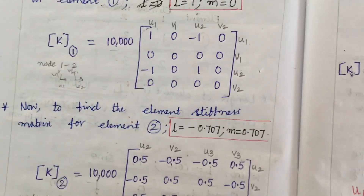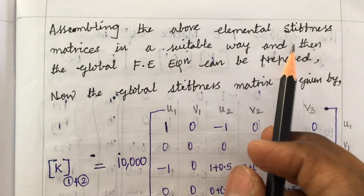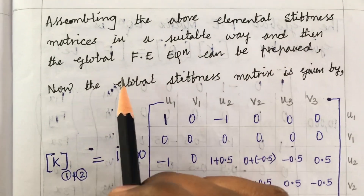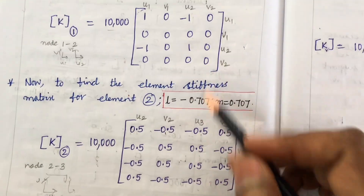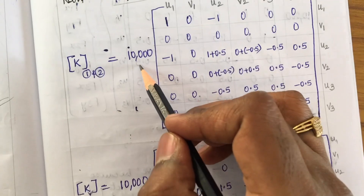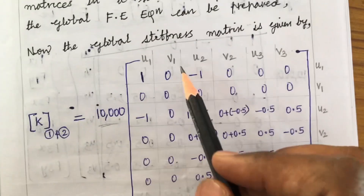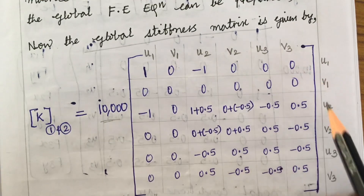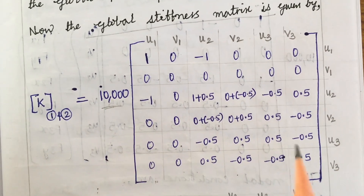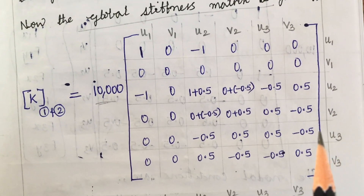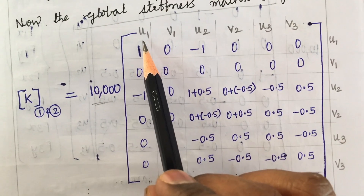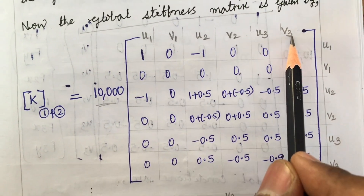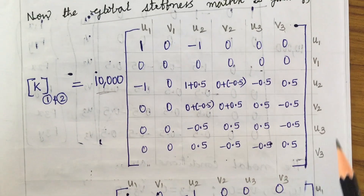Now we assemble the elemental stiffness matrices into the global stiffness matrix. The factor 10,000 is common to both elements. Since we have 3 nodes and 2 degrees of freedom per node, the global stiffness matrix is 6 by 6. The displacement degrees of freedom are u1, v1, u2, v2, u3, v3.